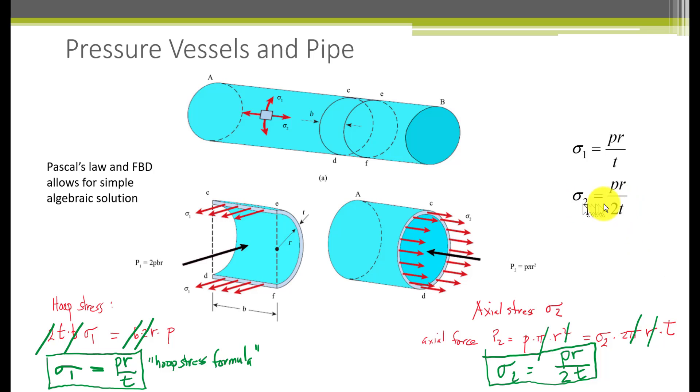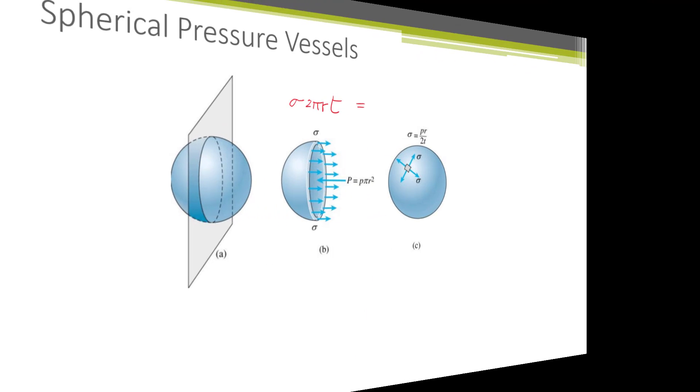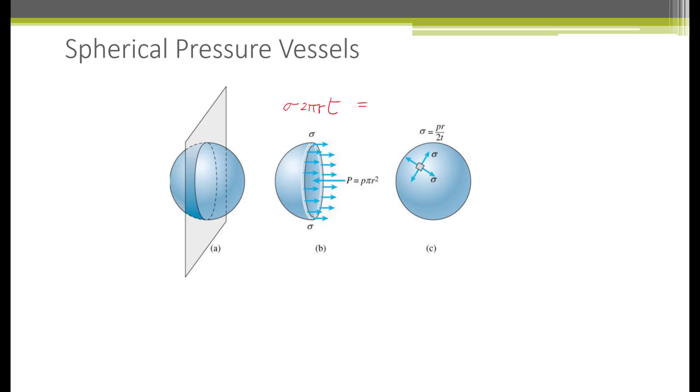Notice the important point that the axial stress is only half of the hoop stress. The spherical pressure vessel also has a biaxial stress condition. Consider this stress element. It's the same no matter where this element is located, so direction becomes irrelevant for the stress element. The stresses are the same in all directions by symmetry.